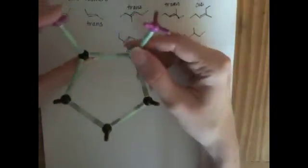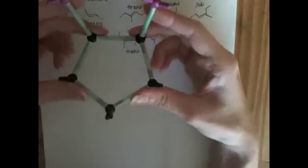And because we don't have free rotation of the carbon-carbon bonds in a cyclic molecule, we can also have cis and trans isomers among cyclic molecules.